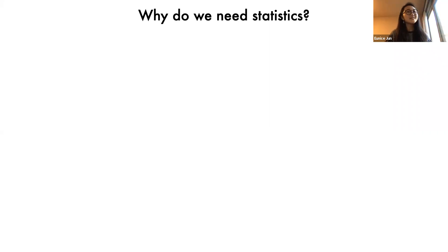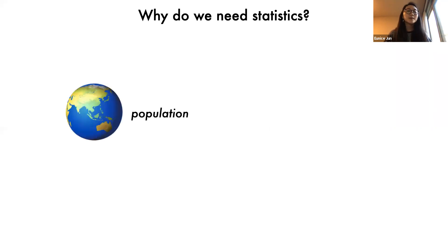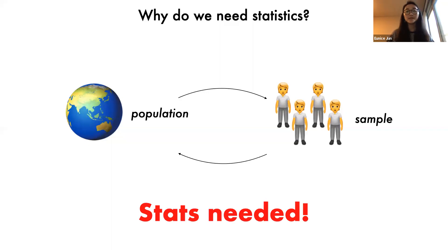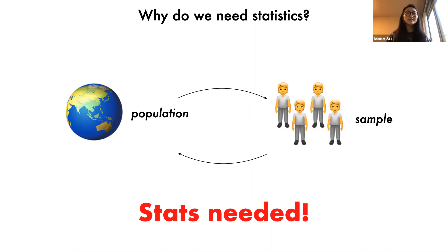Before I get into the details of TEA, I want to take a step back and ask: why do we need statistics and what makes doing statistics difficult? We often want to learn facts about a population but can only obtain data from a subset. For example, we might want to know facts about all human beings on earth, but it's impossible to collect data from all seven billion people. We might want to know facts like average height or differences in lifespans between countries, and we can calculate these from our sample and then make inferences. To be confident our conclusions aren't just due to chance, we need representative samples and robust statistical analyses.